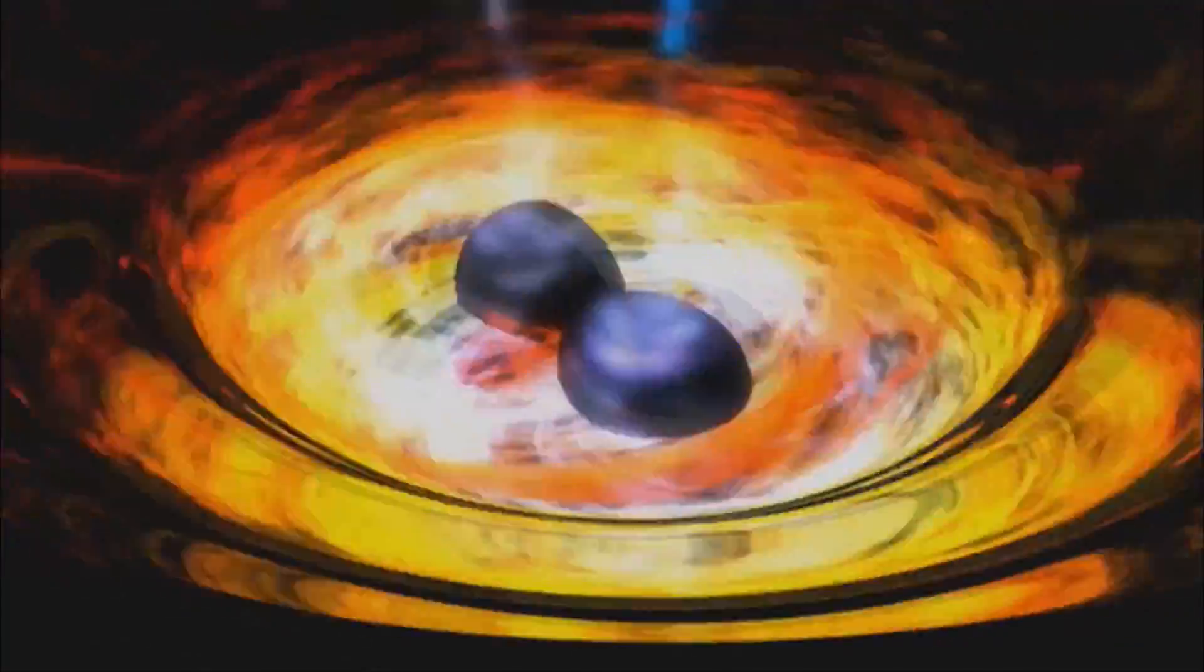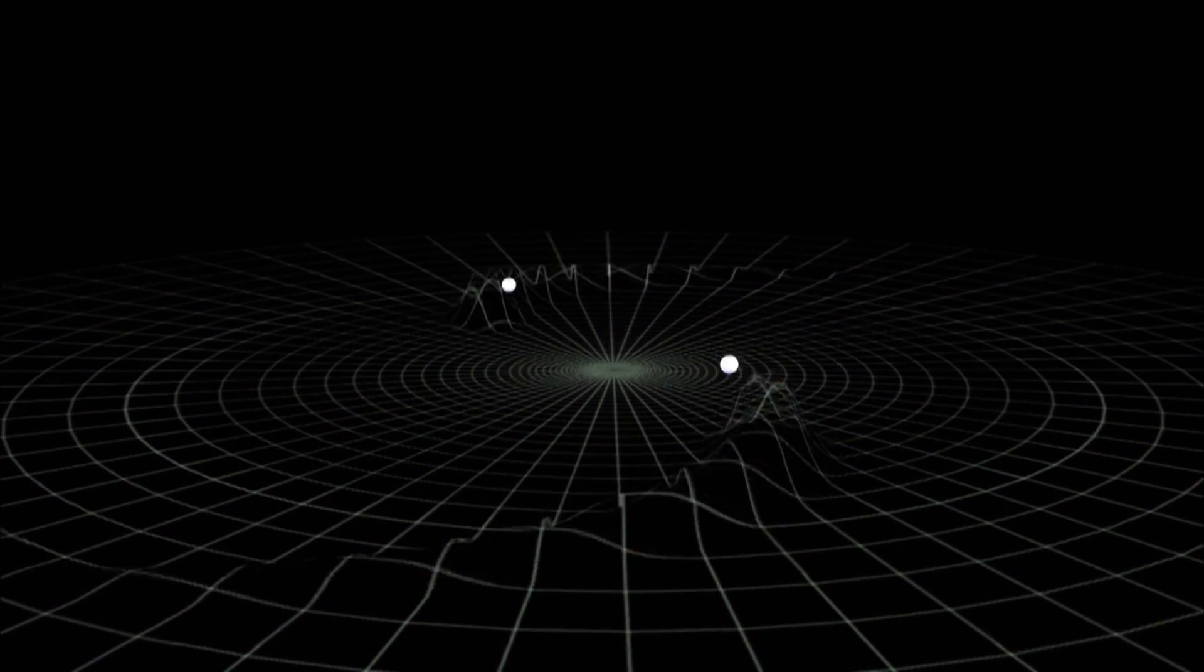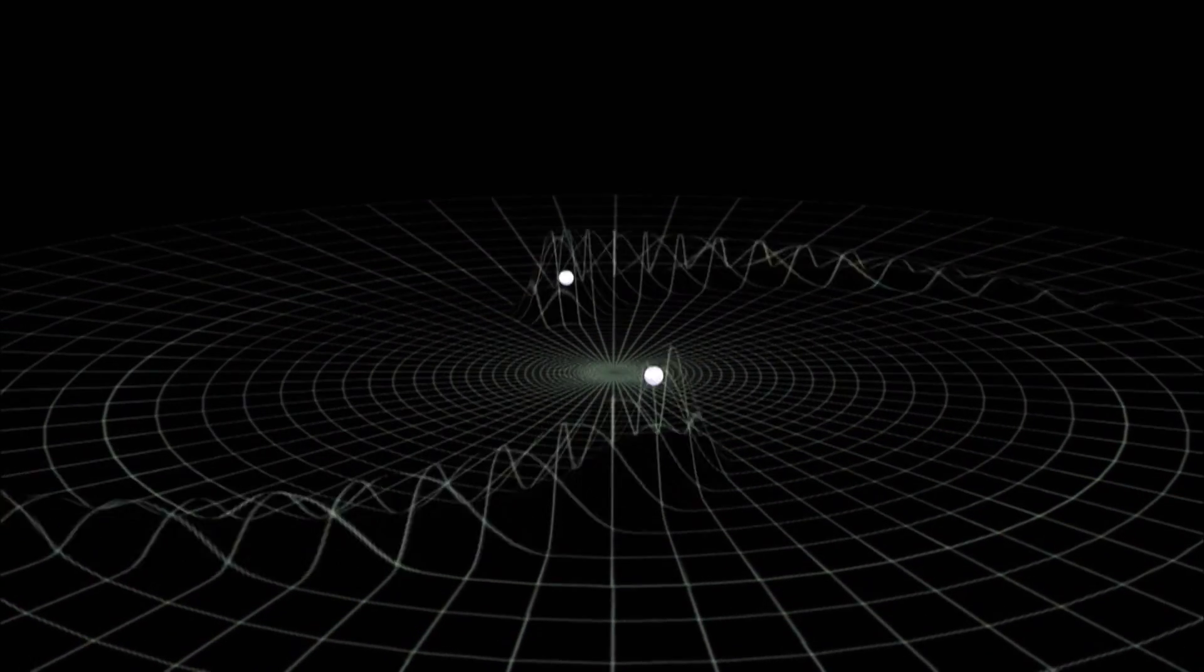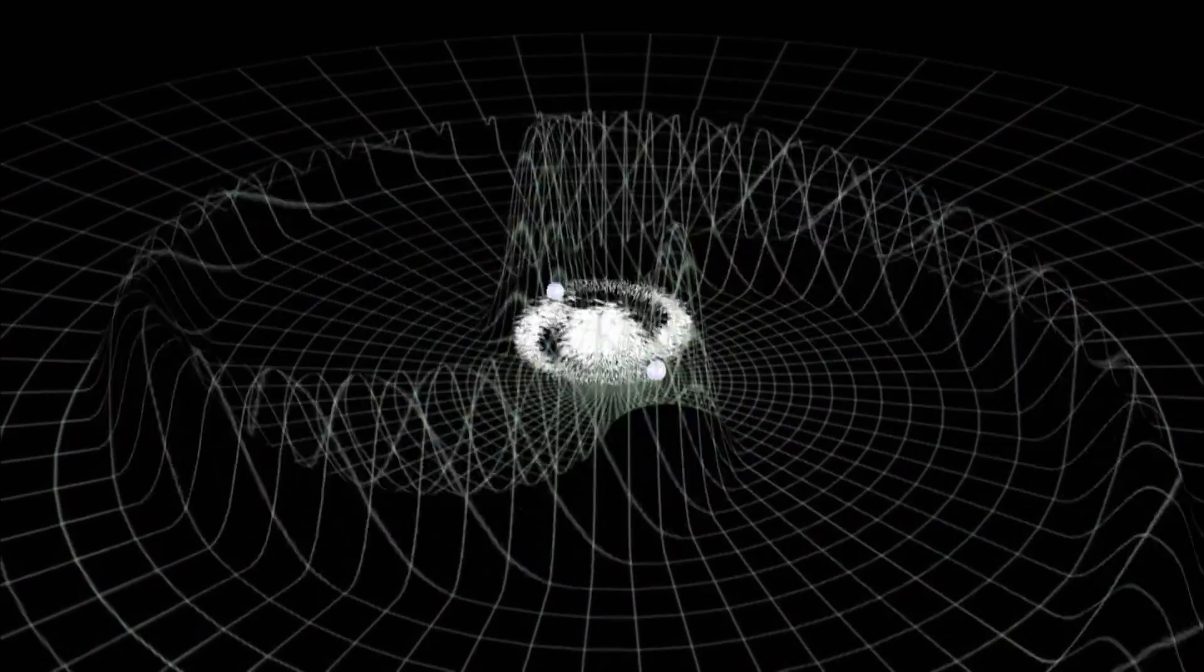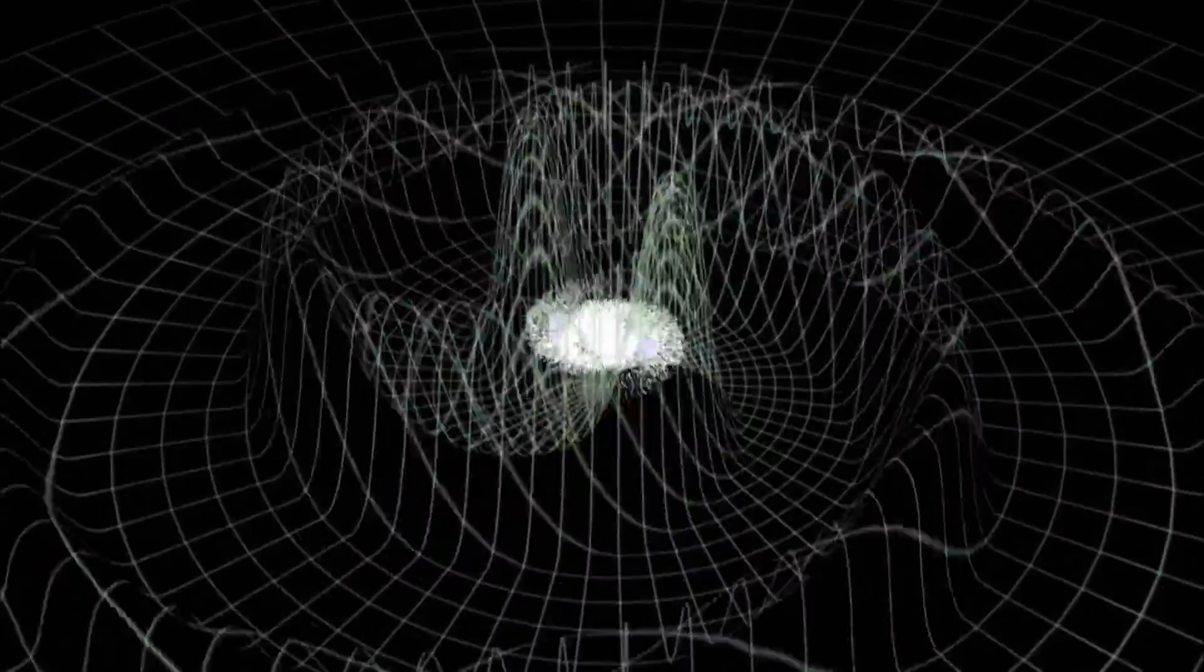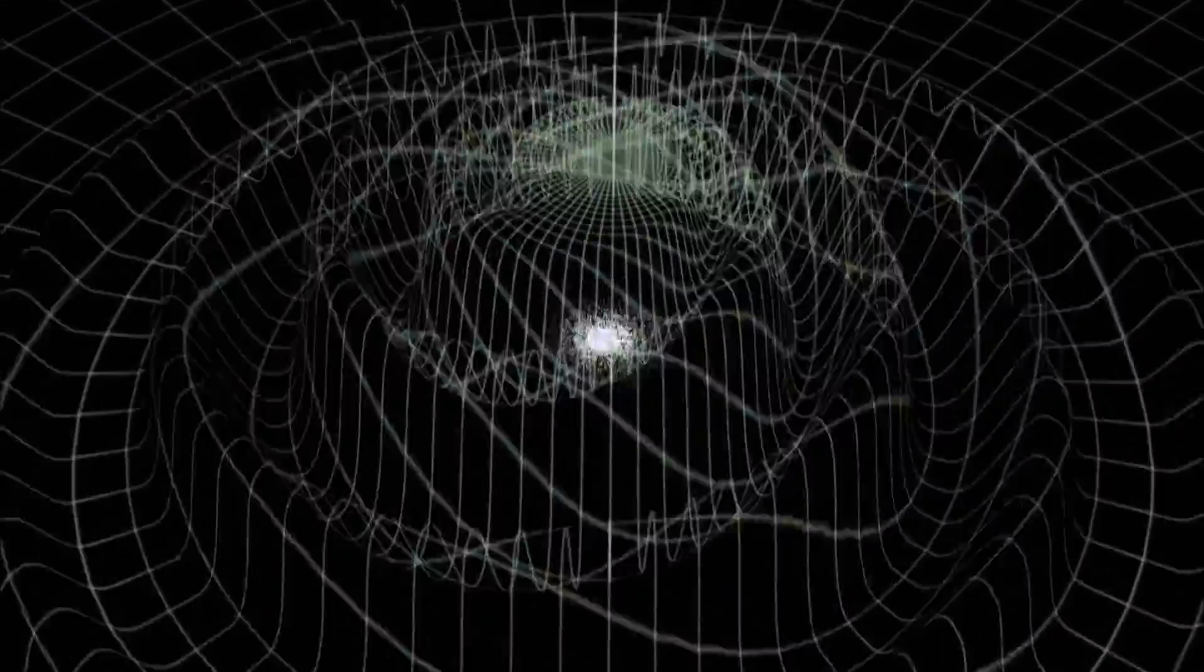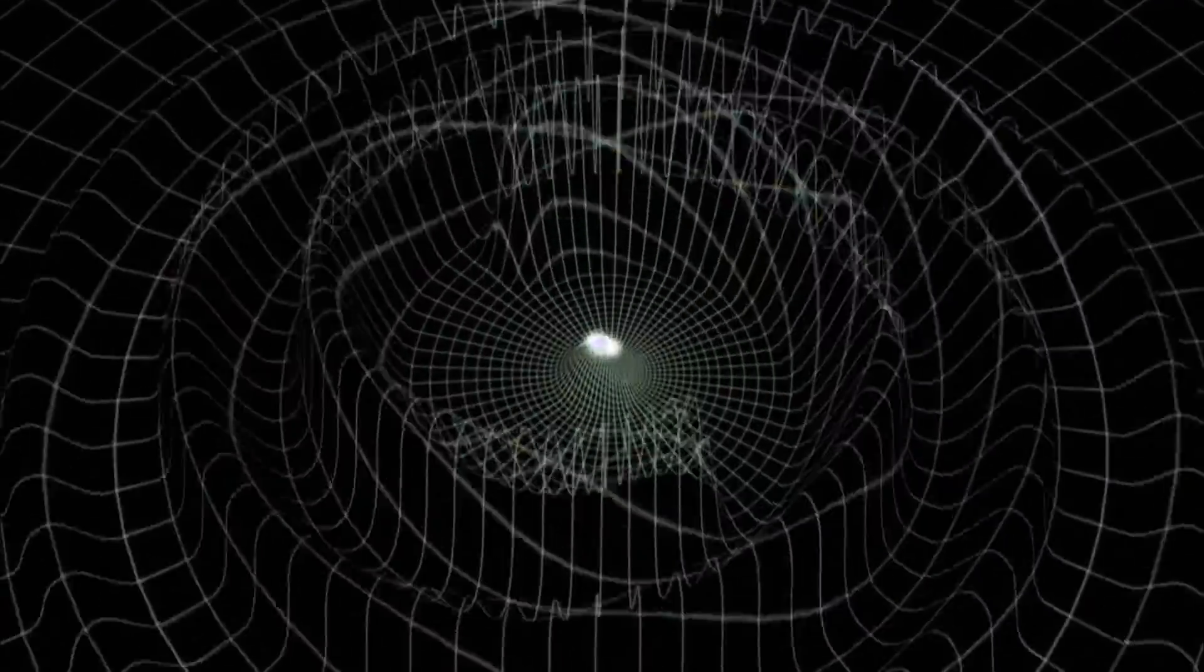To grow large, one black hole must draw the other in, close enough to swallow it. Albert Einstein showed how they do it. He predicted that when massive bodies accelerate, or whip around each other, they can stir up the normally smooth fabric of space-time.